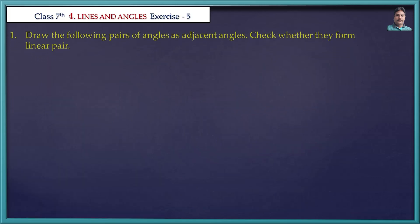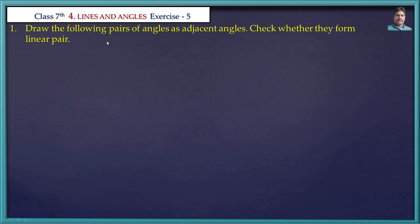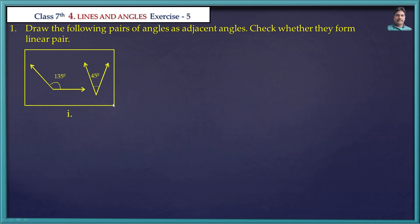First problem: draw the following pairs of angles as adjacent angles. Check whether they form a linear pair. The first bit is 135 degrees and 45 degrees are given. We are going to draw adjacent angles to these two angles and we are going to check the linear pair.